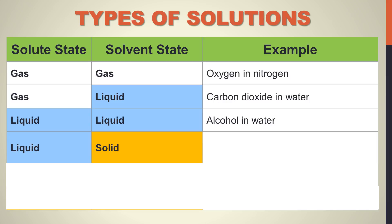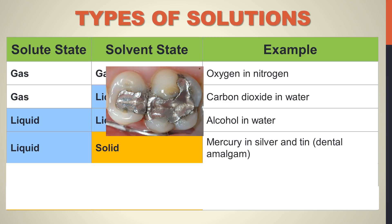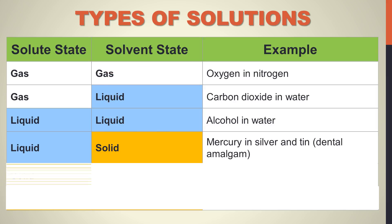You could also have a liquid dissolved in a solid — this one is counterintuitive and not what you'd expect. You'll see it in some of the old mercury fillings used to protect teeth from cavities. That is mercury actually dissolved inside a solid solution of silver and tin — it's called dental amalgam. So that is a liquid dissolved in a solid.